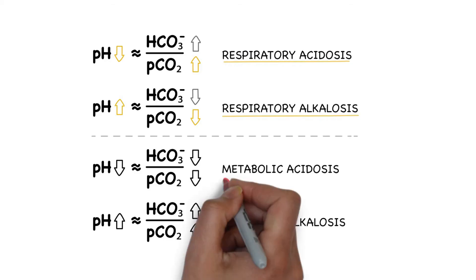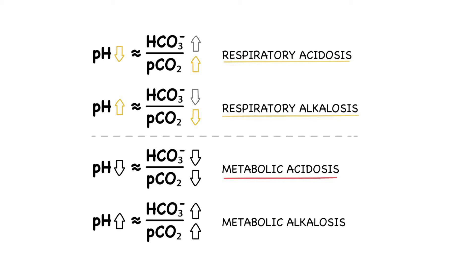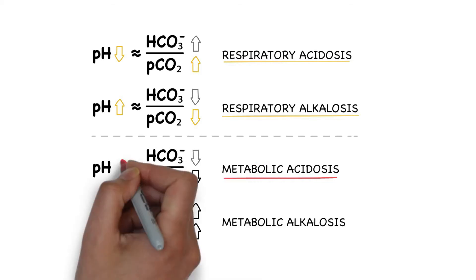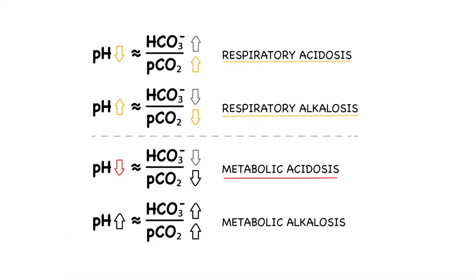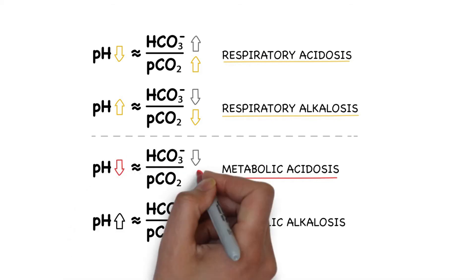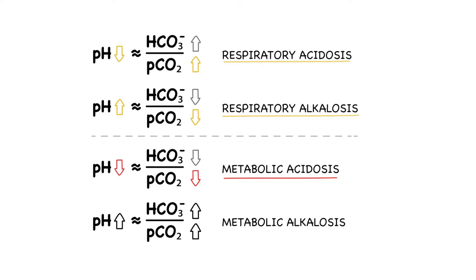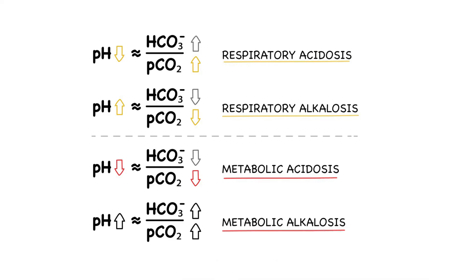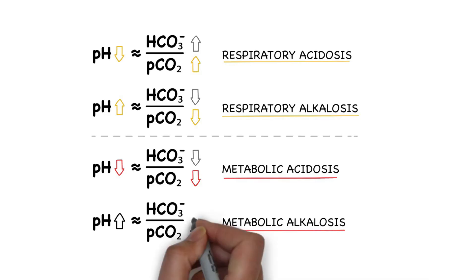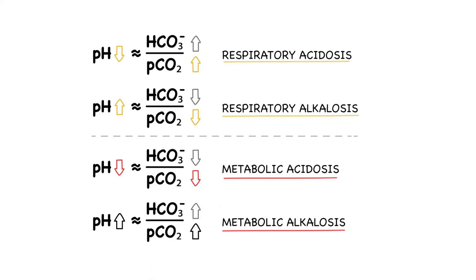In metabolic acidosis, bicarb falls and pH falls, which causes the PCO2 to also fall. In metabolic alkalosis, the bicarb rises, which causes a rise in pH.